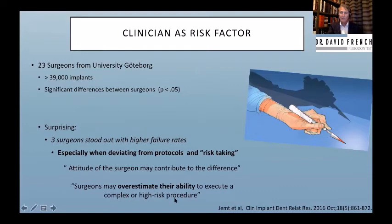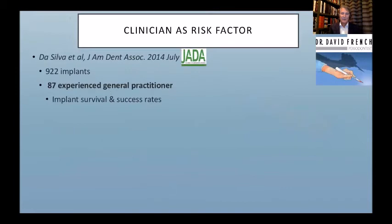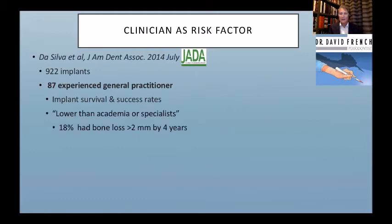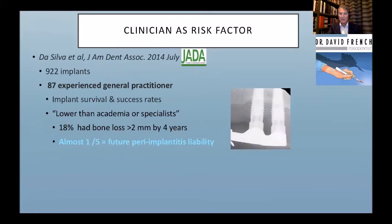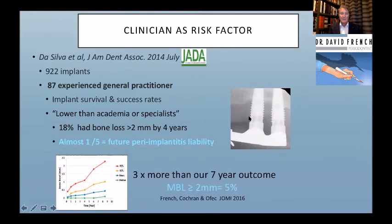Dirks's study showing general dentists placing implants have four times more failures is partly about this — getting into high-risk procedures without understanding what you're getting into. The Journal of the American Dental Association, a journal for and by general dentists, looked at 87 experienced practitioners doing 100 implants per year. Their outcomes were lower than academic or specialist outcomes. For peri-implantitis specifically, 18% had lost over 2 mm of bone by four years — almost one in five is a future liability with exposed rough surface. Our practice outcome at seven years was 5%, so roughly three times the loss in about half the time.